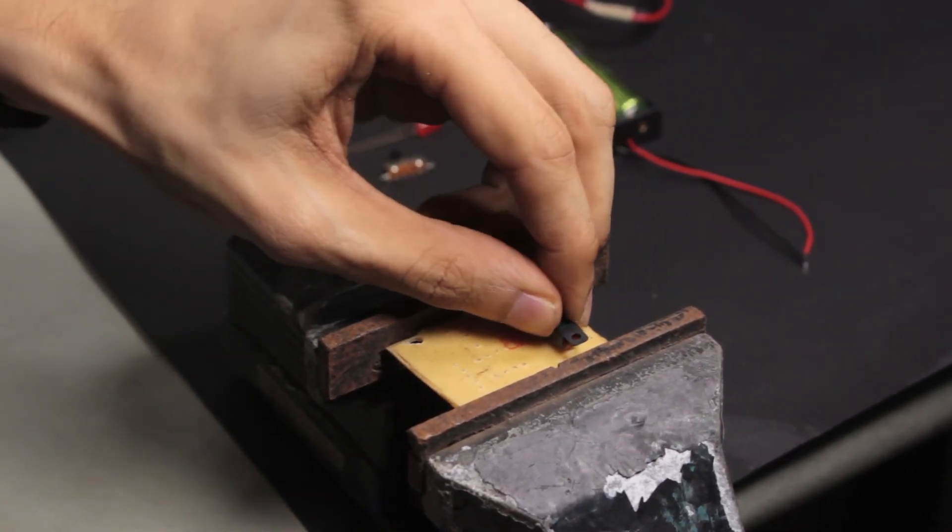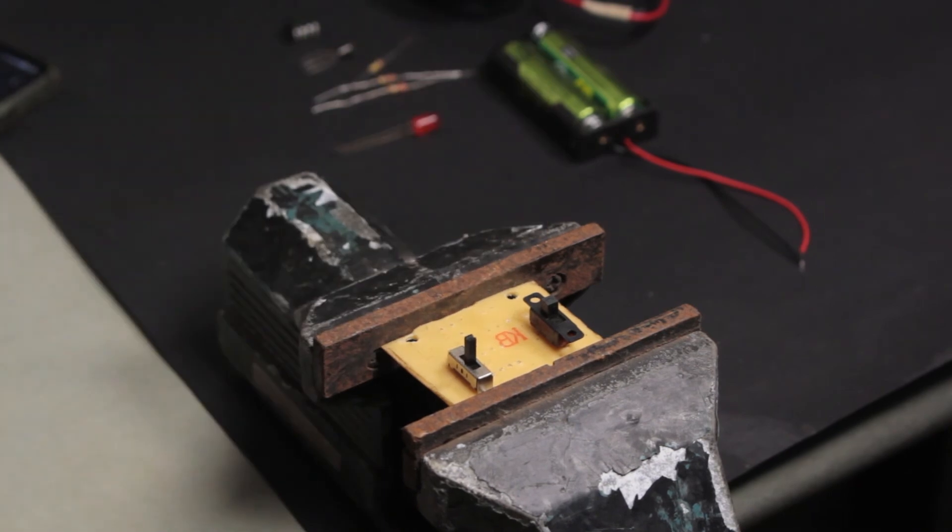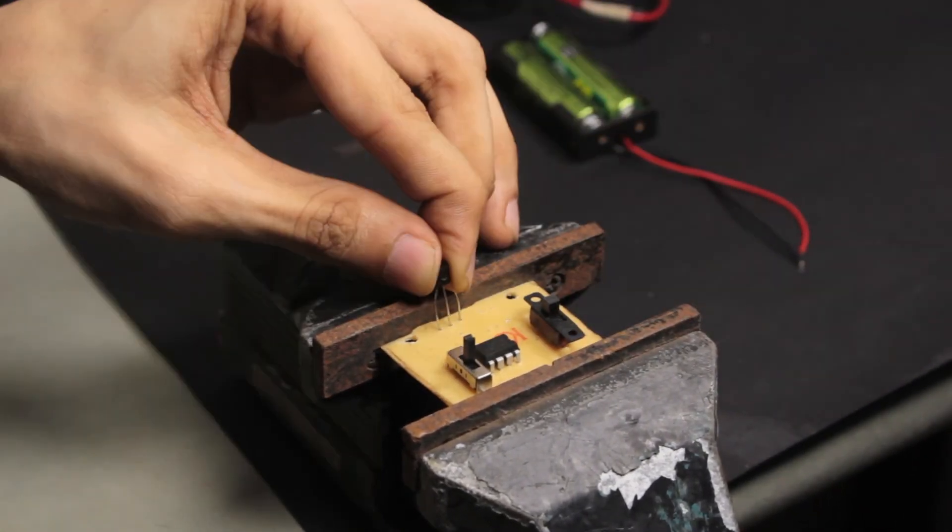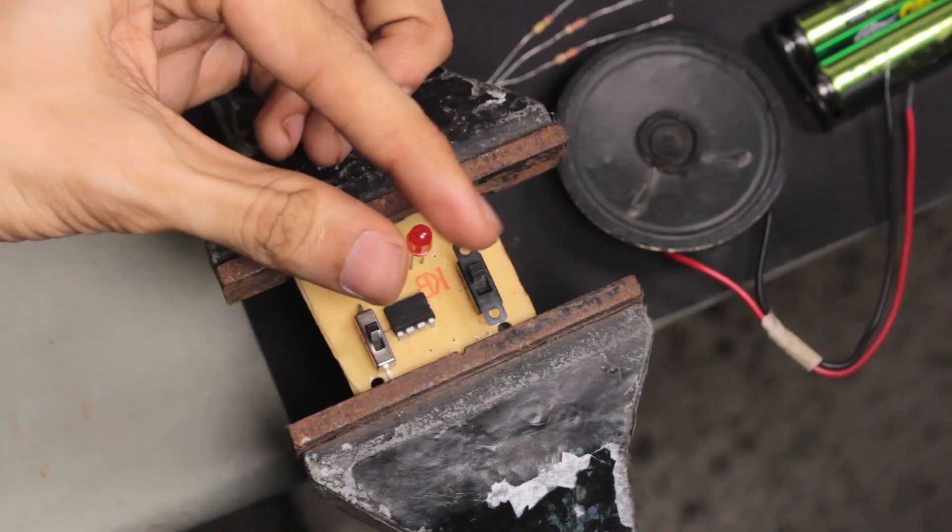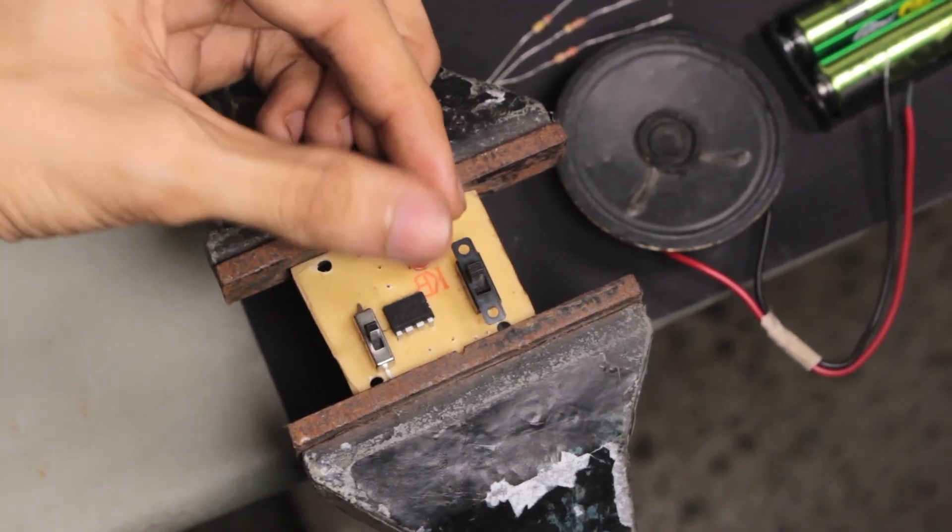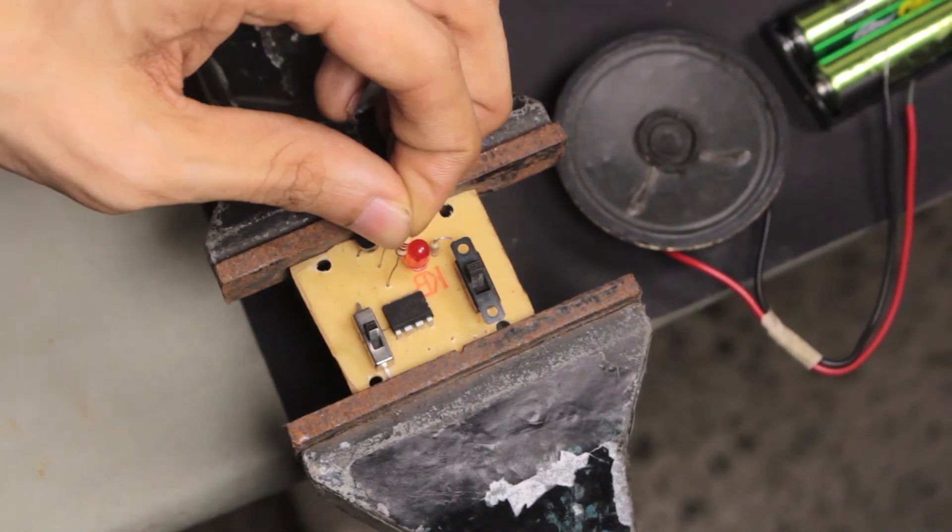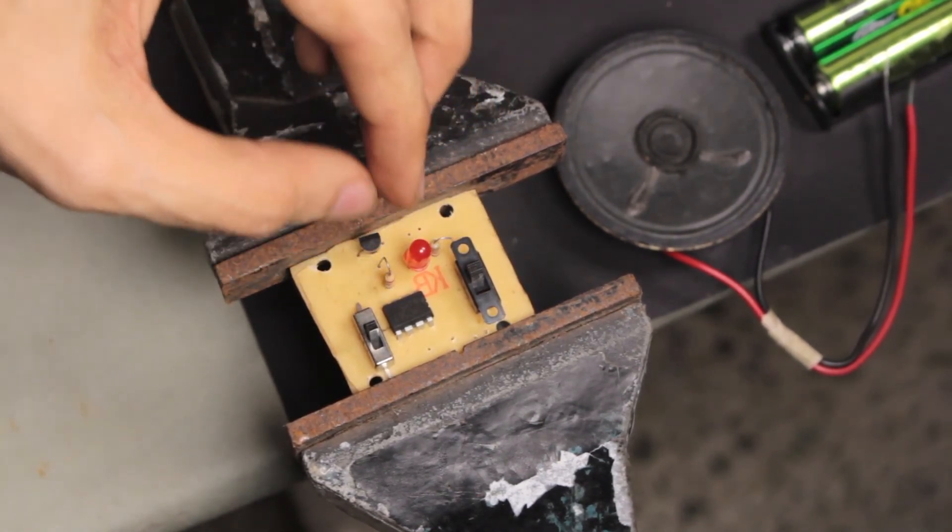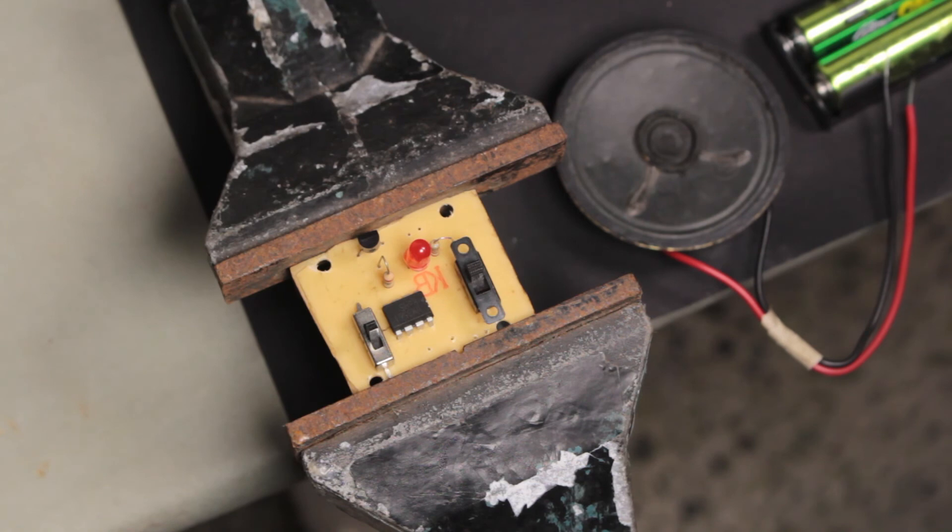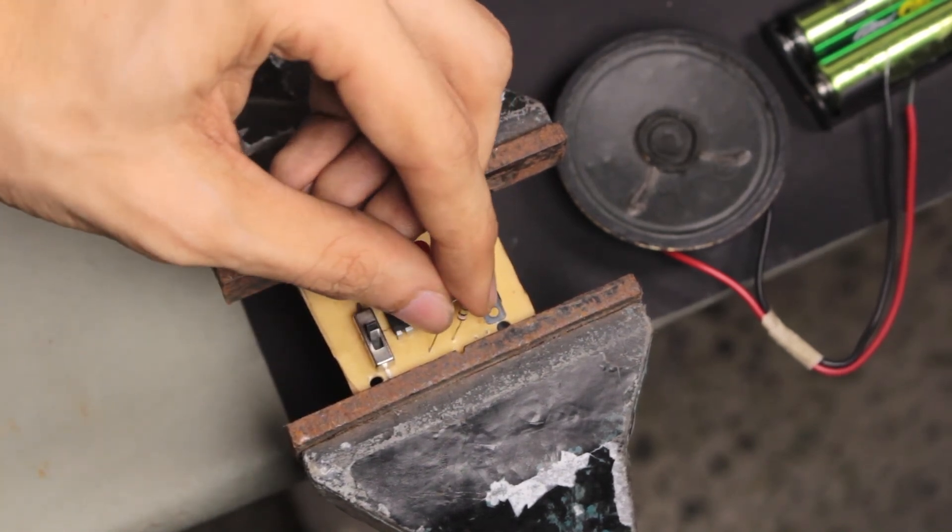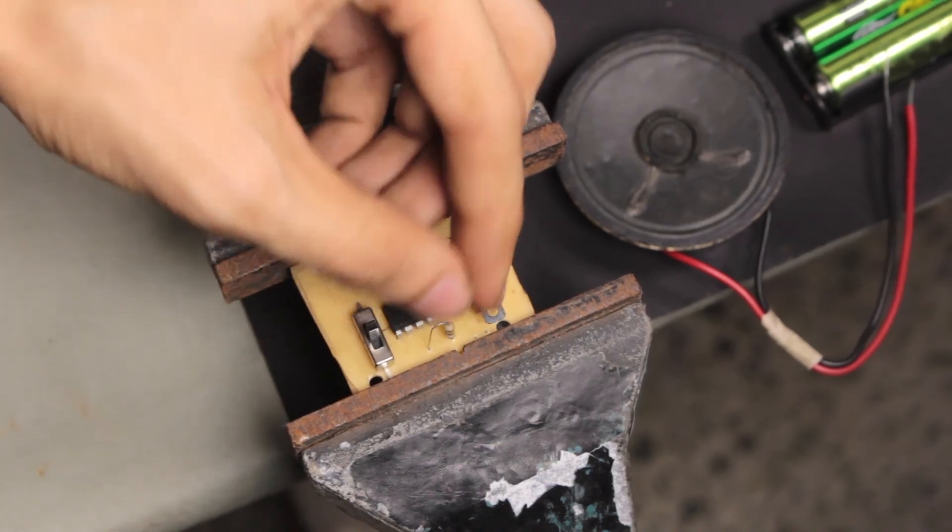I then placed the components onto the board by following the schematic. The 220 ohm resistors are used to limit the current flowing through the LED and the transistor's base. The 220 kilo ohm resistor sets the oscillating frequency of the UM3561. You can vary this resistance in order to change the output frequency.